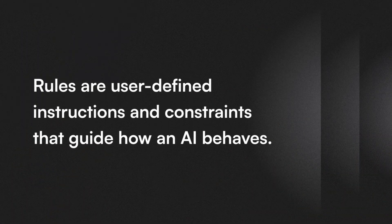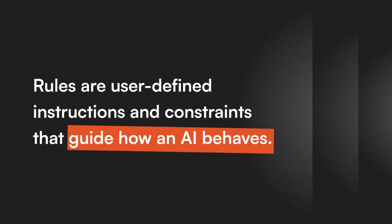Before we get into the benefits of creating rules for AI, it's important to understand their purpose and limitations. This may sound obvious to some, but to others, AI rules may be a little more abstract. So in short, rules are user-defined instructions and constraints that guide how an AI behaves. And that's really it.